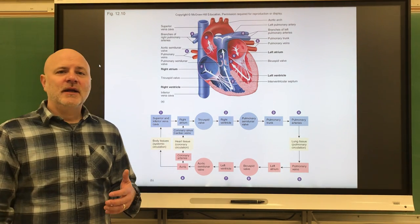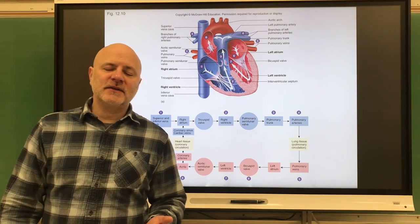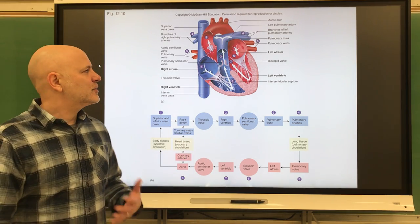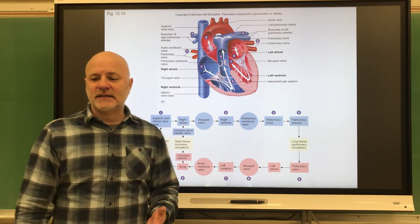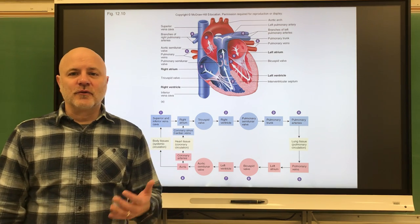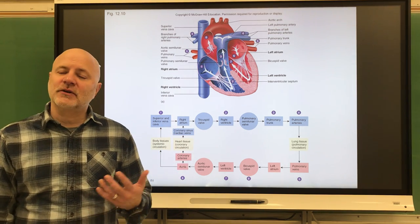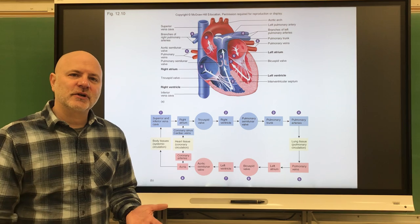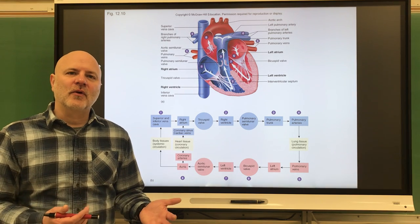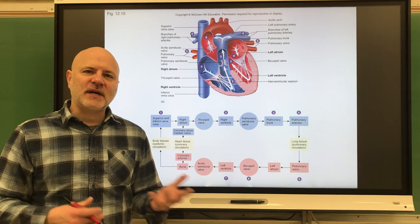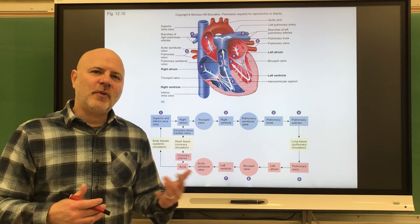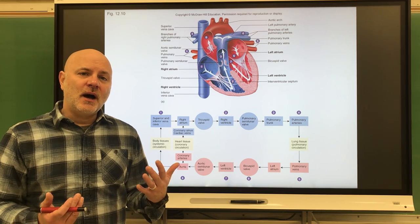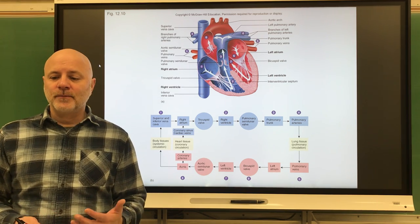Let's look at the second part of this chapter, which deals with heart physiology. We're going to start off with the cardiac cycle. The cardiac cycle is a rhythmic contraction and relaxation of the heart. I'm going to give you a couple terms you've heard before: systole and diastole. You've probably heard those in relationship to blood pressure, but they originate here in the heart.